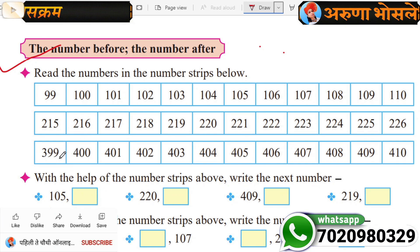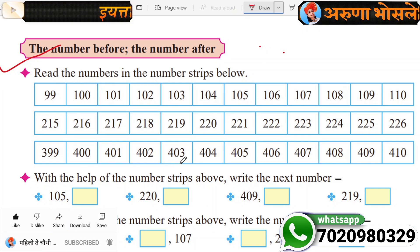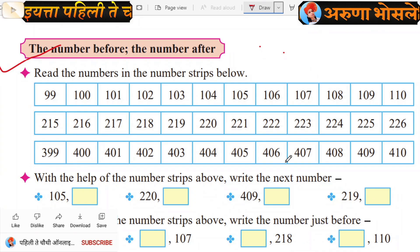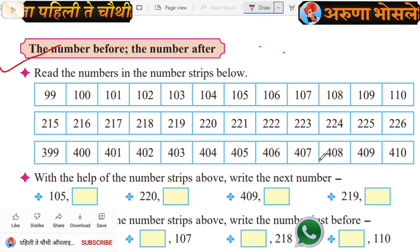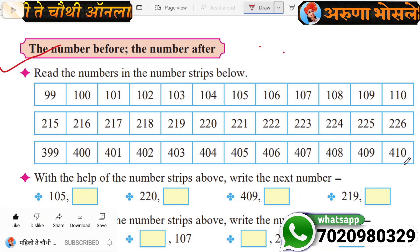399, 400, 401, 402, 403, 404, 405, 406, 407, 408, 409, 410.